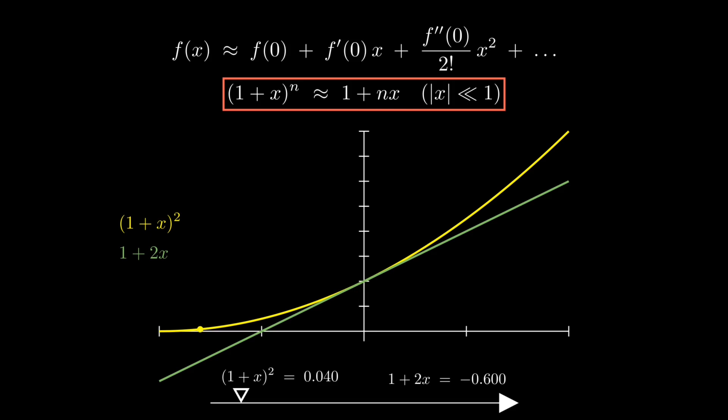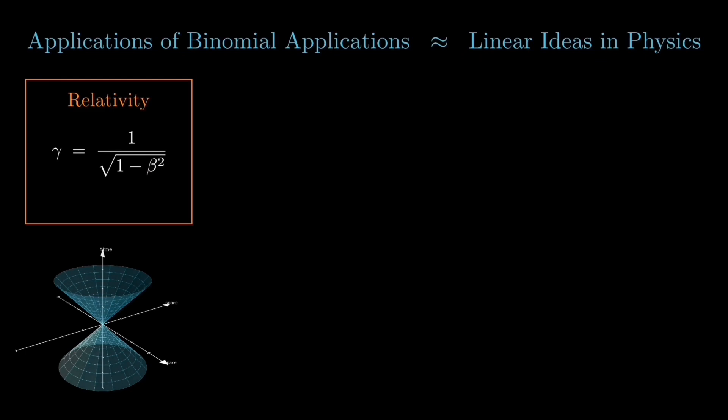Now, the binomial approximation may seem like a trivial mathematical simplification, but it has profound implications in physics. In special relativity, the Lorentz factor, gamma, describes how measurements of space and time change at velocities close to the speed of light. Its exact form is gamma equals 1 over root over 1 minus beta squared, where beta is v over c.